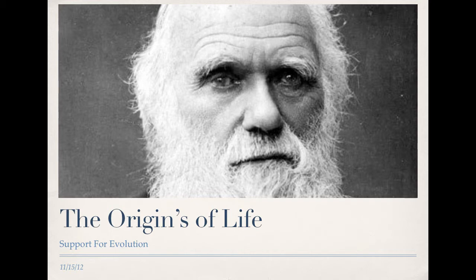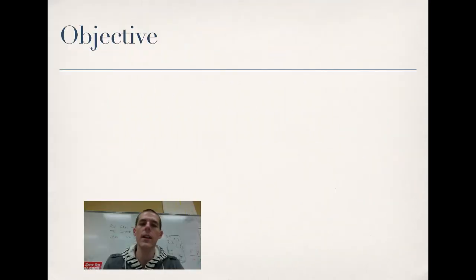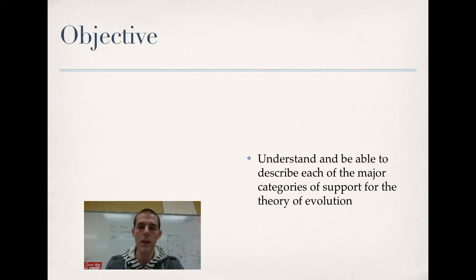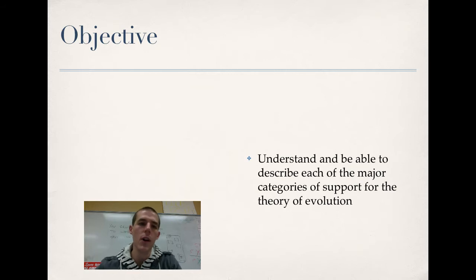Let me apologize if you tried to view this video earlier — there was only about half the video up on YouTube, so sorry for that. This should be the full thing, hopefully. By the end of this video, there's just one objective: to understand and be able to describe each of the major categories of support for the theory of evolution. There are four major categories, and I'm going to go through each one, so let's jump right in.